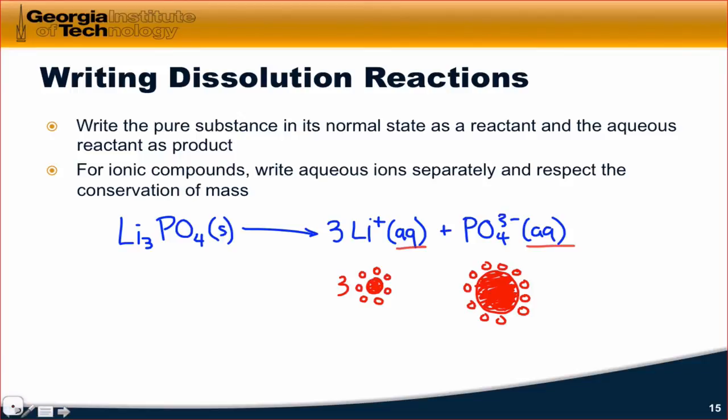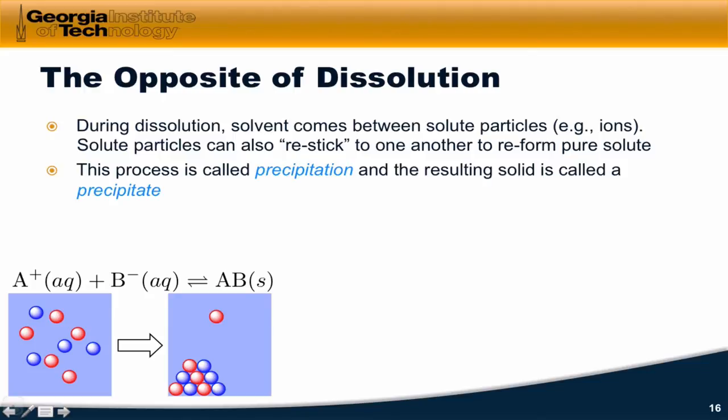So during dissolution, solvent comes between solute particles such as ions. That causes a separation of the ionic particles. But the solute particles can also re-stick to one another to re-form pure solute. And we often think about this in the context of ions, but it can happen for solvated covalent compounds as well. A compound like sucrose can precipitate out if the interactions between solute particles are strong enough. This process is known as precipitation and the resulting pure solute that comes out of solution, often as a solid, is called a precipitate.